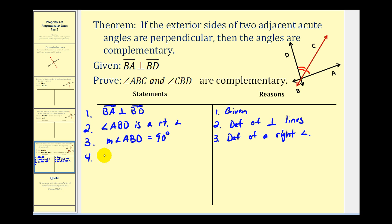We also know that the measure of angle ABD must equal the measure of angle ABC plus the measure of angle CBD. This is by the angle addition postulate.